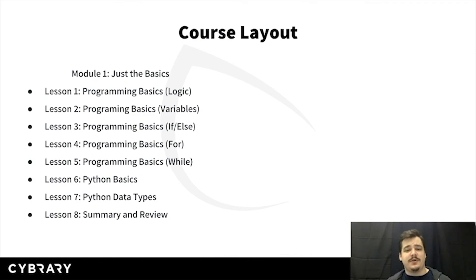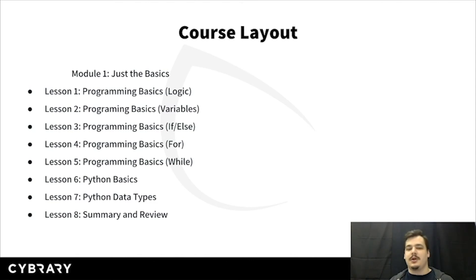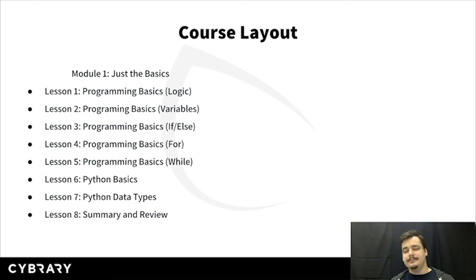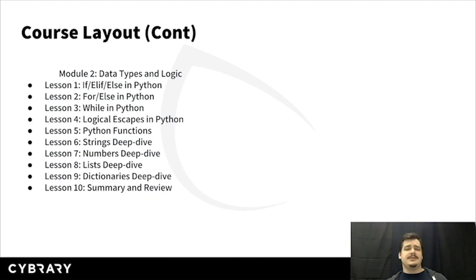So what is the course layout? We've got two modules. The first module is going to be eight lessons long — seven informative lessons and then an eighth which is a summary and review. We're going to start with programming basics: logic, variables, if and else statements, for loops, and while loops. Then near the end of the first module, we're going to dig into Python itself — basic syntax, how to make scripts, and Python data types like strings and numbers. All of module two is going to be spent taking the concepts from module one, applying them to Python, and deep diving on those subjects along with some other Python-specific information.